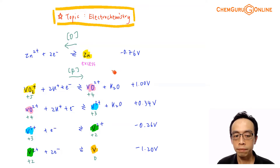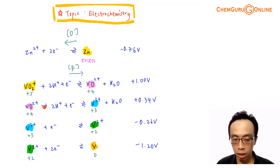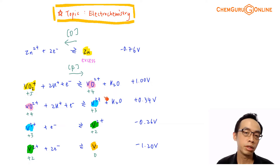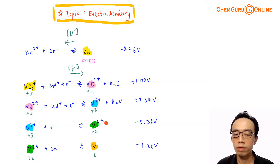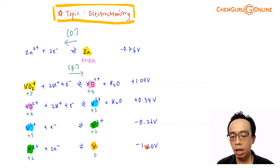VO2+ with a +4 oxidation state also appears in the data booklet and can be reduced to V3+, with an E-value of +0.34 V. V3+ also appears and can be reduced to V2+ with an E-value of −0.26 V. Finally, V2+ can be reduced further to vanadium metal, with an E-value of −1.20 V.